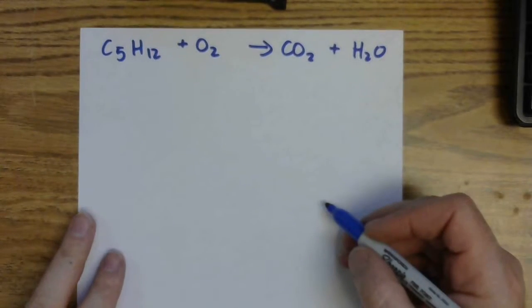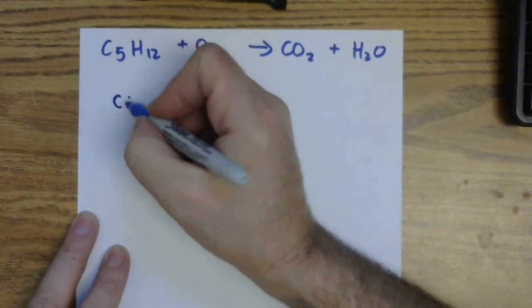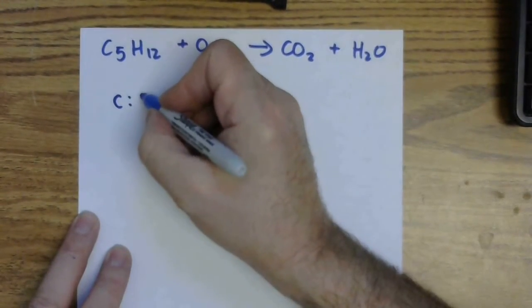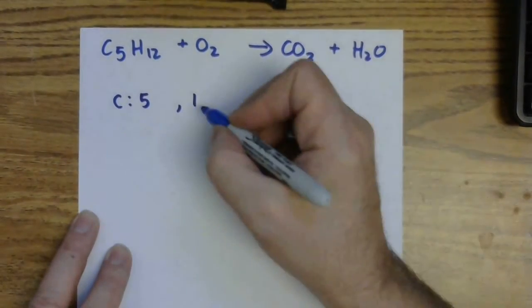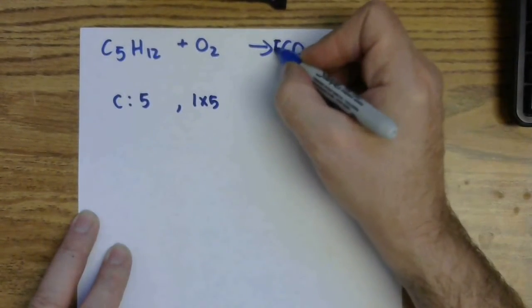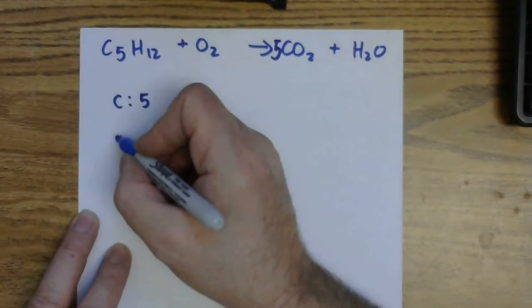Okay, so we're going to do another balancing example now. I'm going to start by balancing for carbon. On the left, I have five carbons. On the right, I have one. So I'm going to place a coefficient of five in front of my carbon dioxide to bring the carbons into balance.